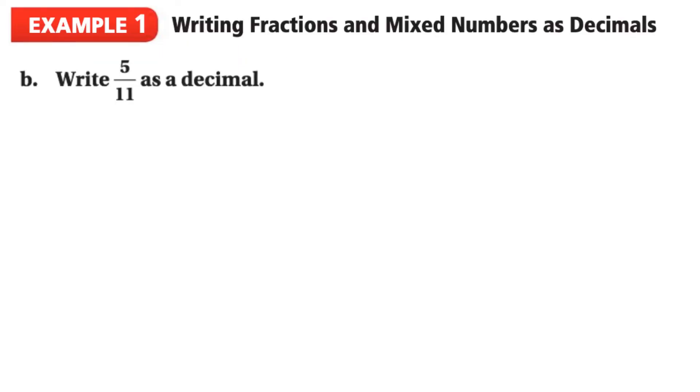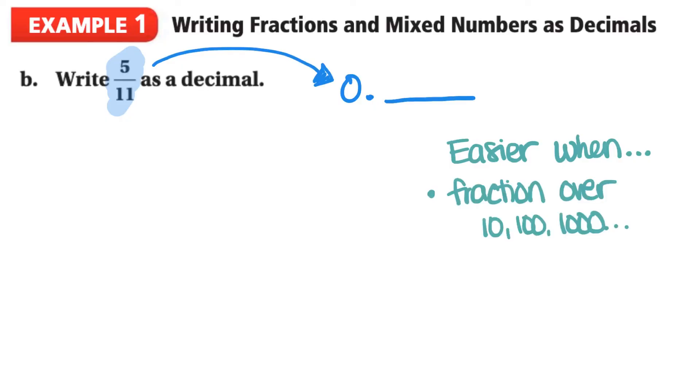Alright, taking a look at letter B, we want to do 5 over 11 as a decimal. So this fraction is less than 1, so we know that our decimal number is definitely going to be 0 point something. So we're going to do the exact same thing that we did before. It's always easier when we try to convert into decimals to make it a fraction over 10, 100, or 1,000. That's our first step to make it easier.